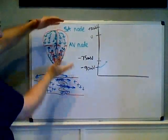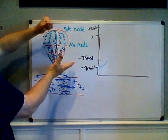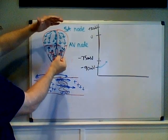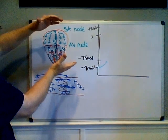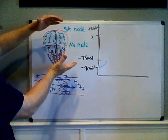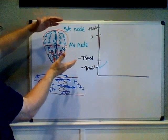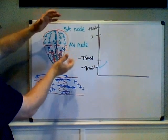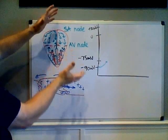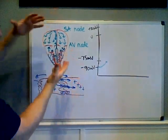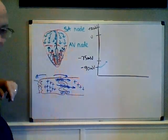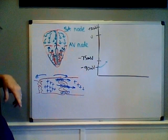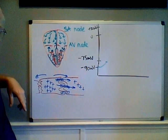It's a unique rhythm: one — atria contract; two — atria relax while ventricles contract; three — ventricles relax; four — all four chambers stay relaxed. That unique contraction occurs because of this conducting system of the heart.